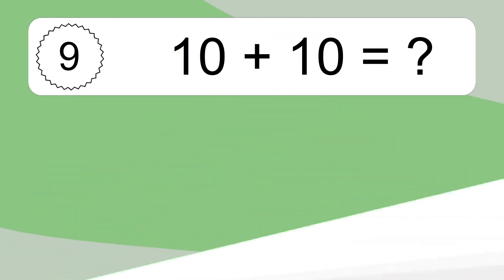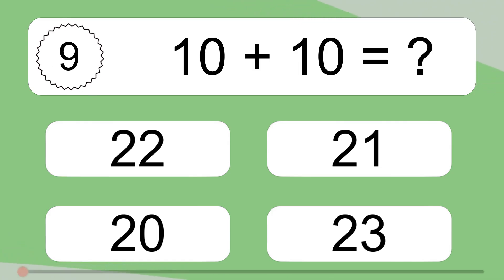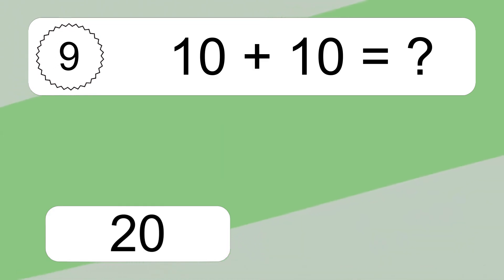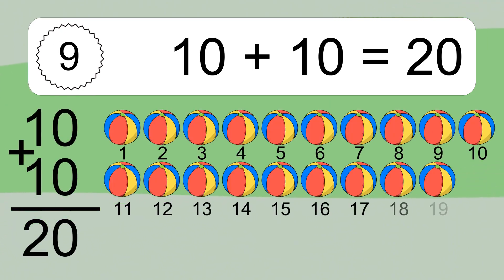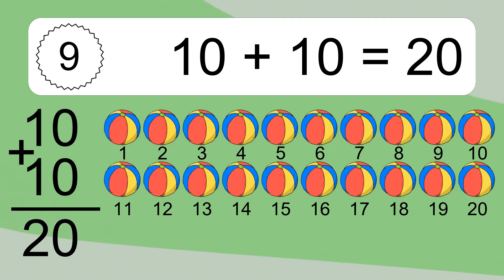10 plus 10 equals what? 10 plus 10 equals 20. Let's count it. 1, 2, 3, 4, 5, 6, 7, 8, 9, 10, 11, 12, 13, 14, 15, 16, 17, 18, 19, 20.